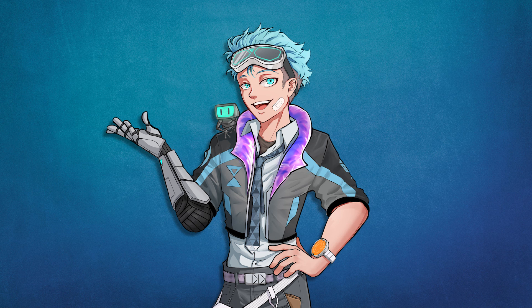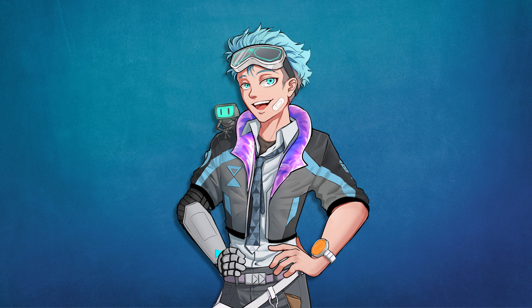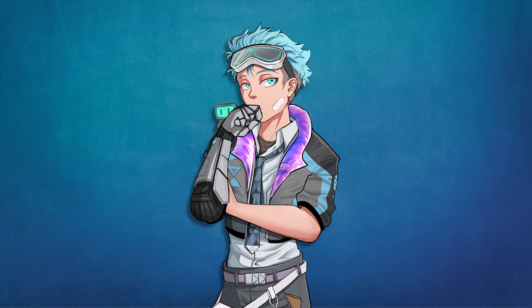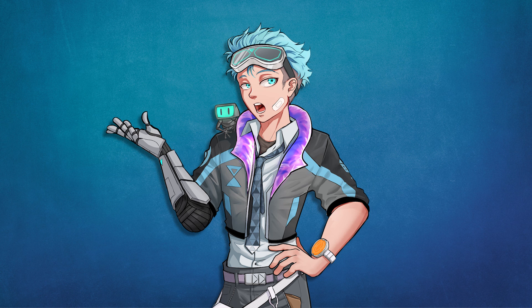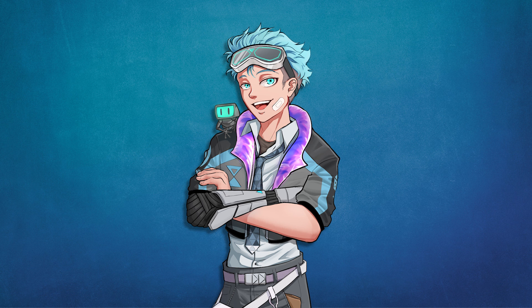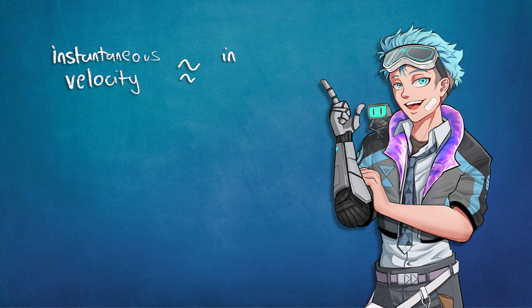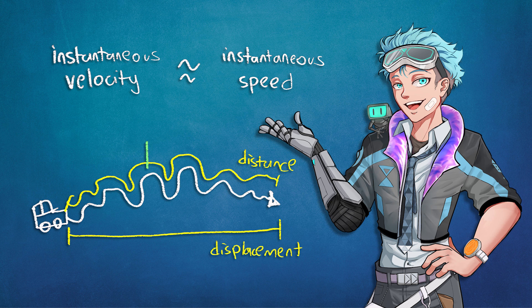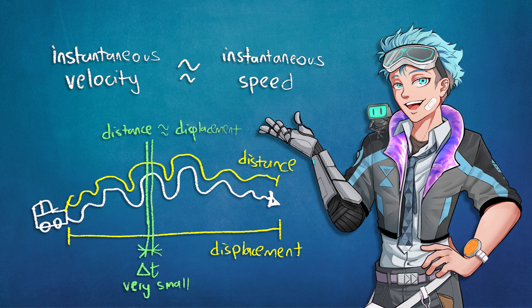Your mom waiting for you to get home doesn't care if you take the long route or the short route — only that you go from where you were to home in a certain amount of time. Hence, displacement, and hence, velocity. In science, velocity is generally preferable since the direction of movement is almost always relevant, and it never really hurts to have that information even if you don't end up using it. An object's instantaneous velocity is extremely similar to its instantaneous speed, because the narrower the time period you use, the less movement you're accounting for — and the more distance and displacement resemble each other.